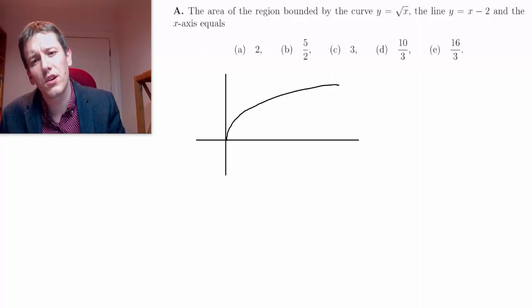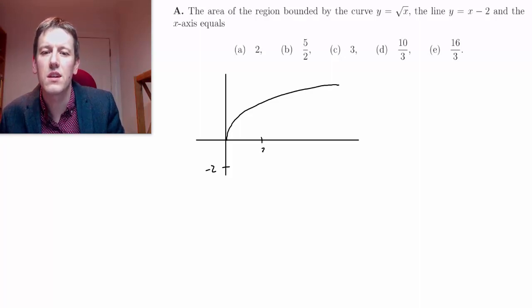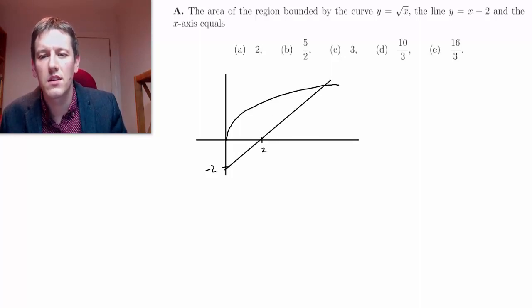So a straight line with gradient 1 and y intercept minus 2, so it's going to go through minus 2 here and 2 here, and then it's going to be a straight line that looks like this. So we should be able to sketch that pretty quickly, and we want the area of the region bounded by these curves on the x axis.